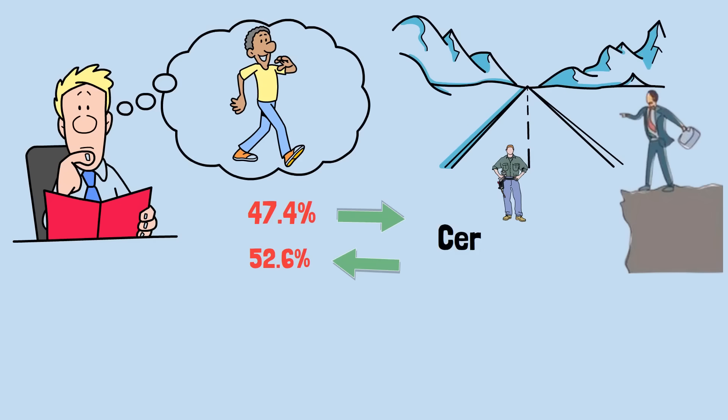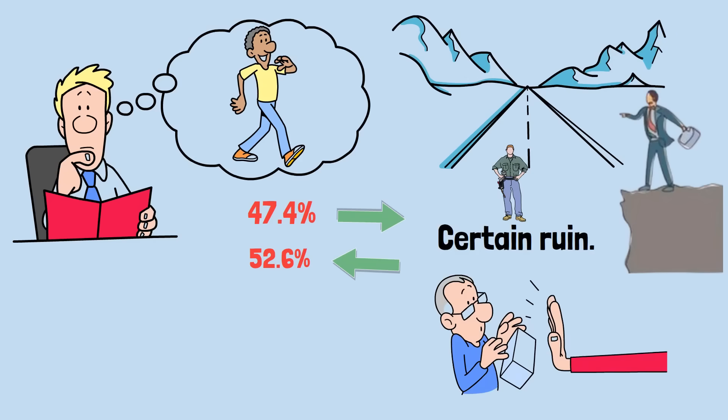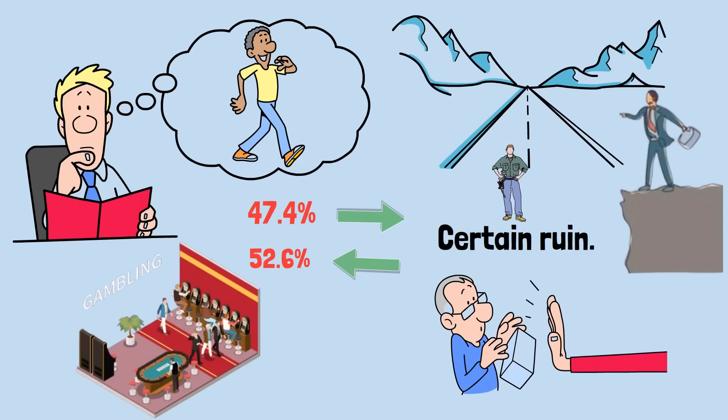The mathematical term for this is certain ruin. When the odds are against you, even slightly, and you play indefinitely, mathematical certainty dictates that you will eventually lose everything, regardless of your starting position.